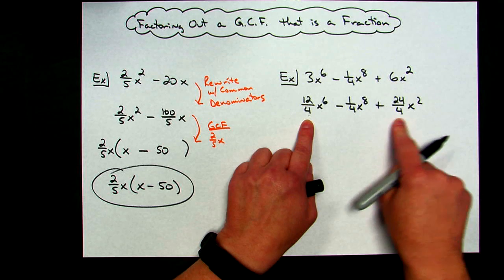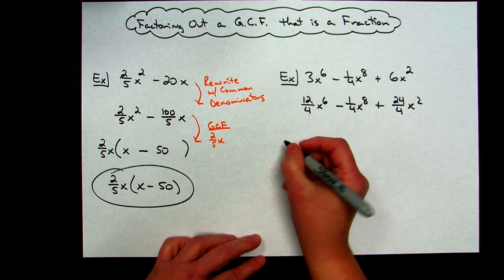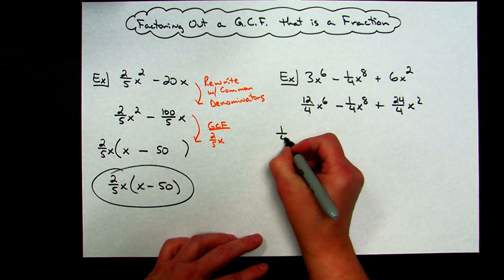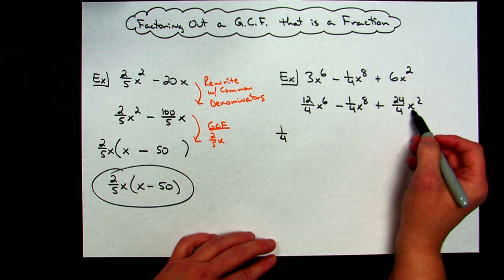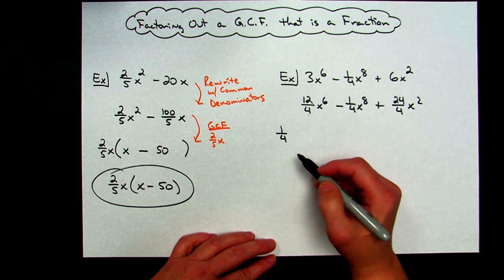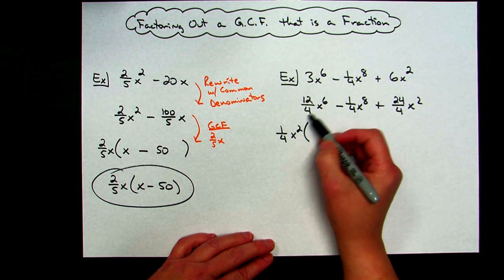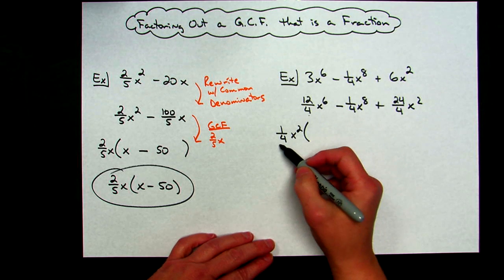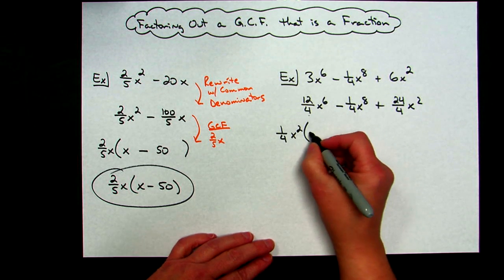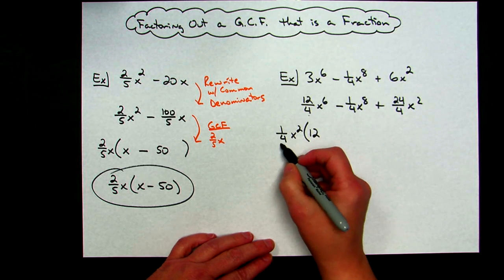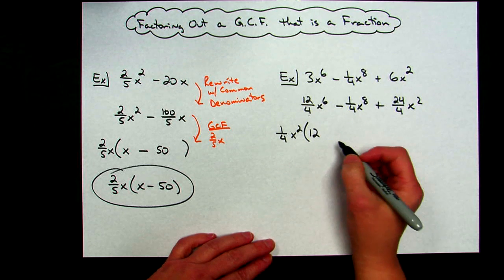What's the biggest number of fourths I can take out of all of those? Since one of them is 1/4, I can only take out 1/4. So my fractional GCF is 1/4. Now I go back and look at the variables. The most I can take out of all three terms — x⁶, x⁸, and x² — is x². So my overall GCF is 1/4 x². To check: 1/4 times 12 gives 12/4, which is correct.